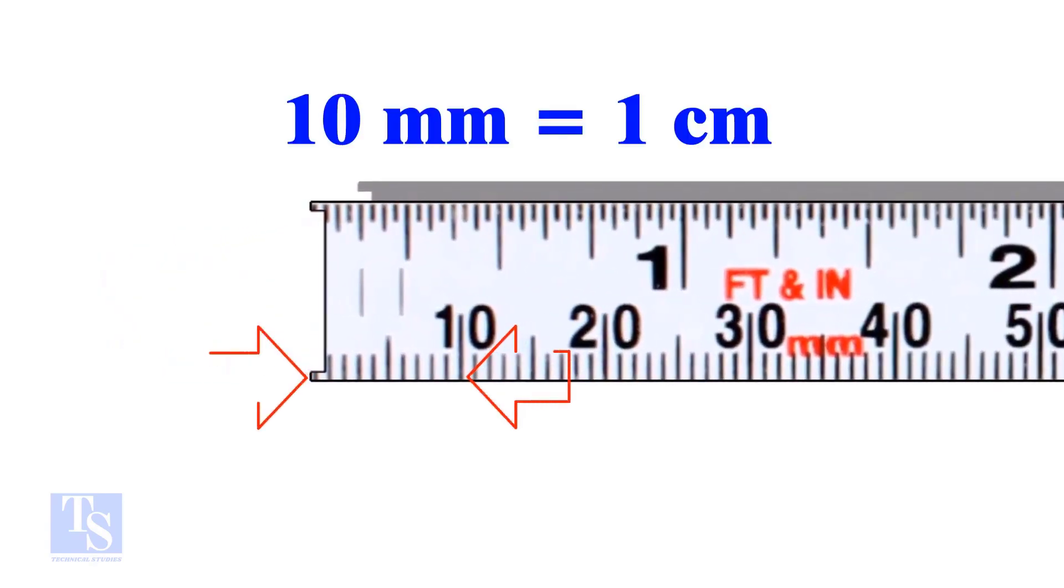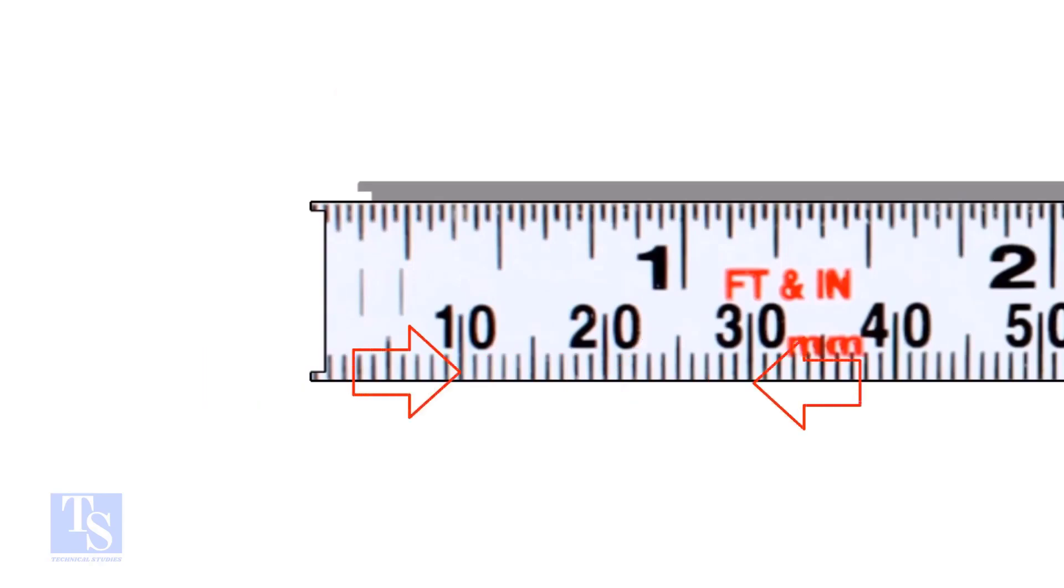From here to here, it is 10 millimeters or 1 centimeter. This is 20 millimeters or 2 centimeters. What is the distance from here to here? That is 30 minus 10 is equal to 20 millimeters.